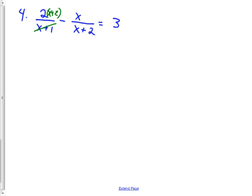On this one, I would know that the x+2 would cancel, so I'm going to multiply it only by x+1. On this one, I have to multiply it by both, x+1 and x+2.